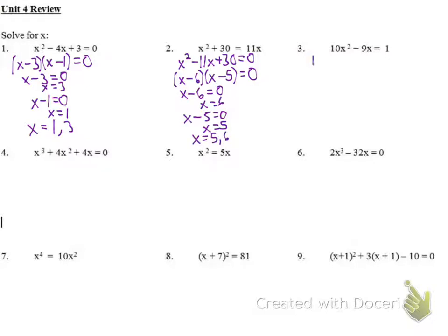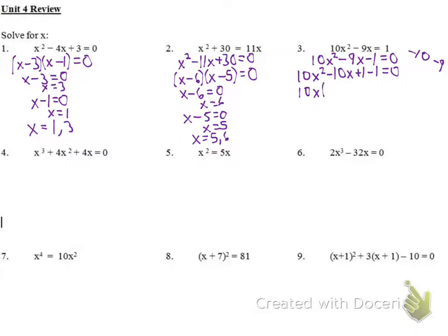Number three, we subtract over and get 10x squared minus 9x minus 1 equals zero. This is where I have a coefficient on the x squared, so I'm going to look for a product of negative 10 that adds to negative 9. If I did negative 10 and positive 1, I could break this apart to be 10x squared minus 10x plus 1x minus 1 equals 0. I'm breaking up that negative 9x into two terms, which will allow me to factor by grouping.